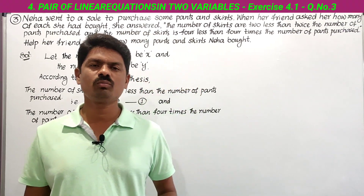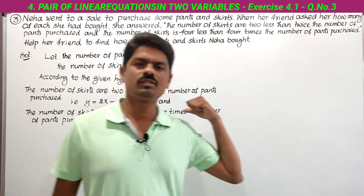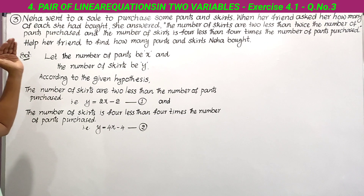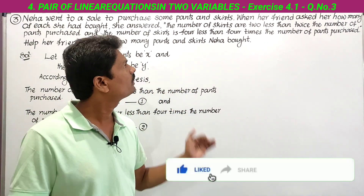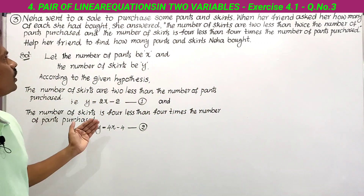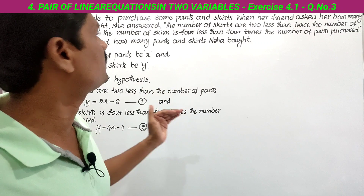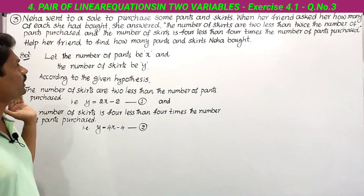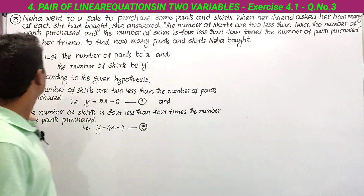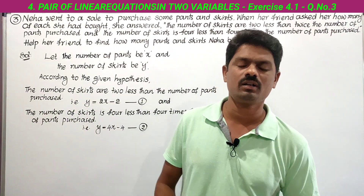Hi, hello! Welcome to our channel 'Learn More Mess.' Today we are going to solve the third problem from Exercise 4.1. See here what is given: Neha went to a sale to purchase some pants and skirts. The number of skirts are two less than twice the number of pants purchased, and the number of skirts is four less than four times the number of pants purchased. Help her friend find how many pants and skirts Neha bought.